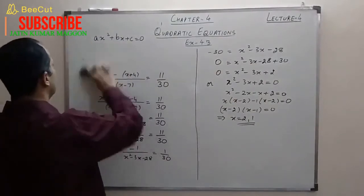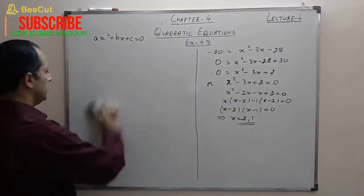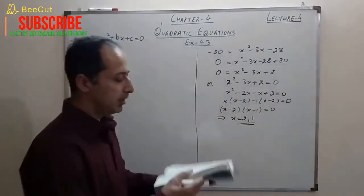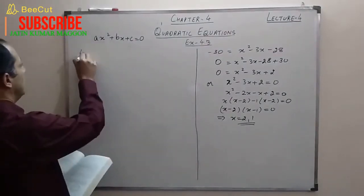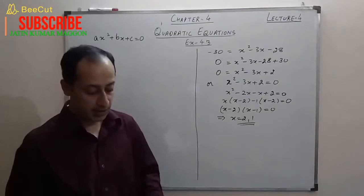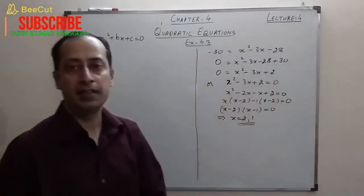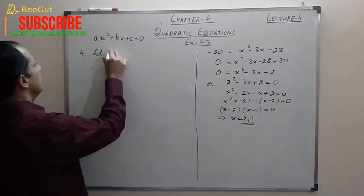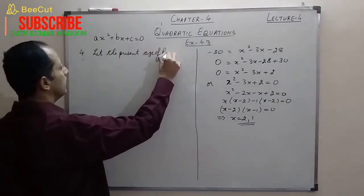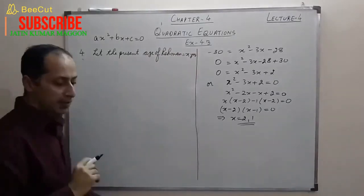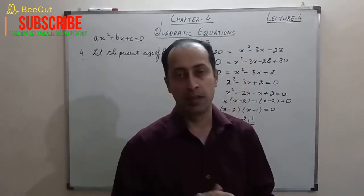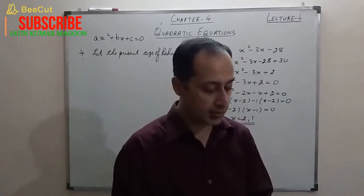Now we move to the statement questions of Exercise 4.3. We won't do all of them today — the remaining will be covered in the next lecture. Question 4 is an age question: the sum of reciprocals of Rahman's age 3 years ago and 5 years from now is 1/3. Find his present age. Let the present age of Rahman = x years. To solve any statement question, you need to break the statement.